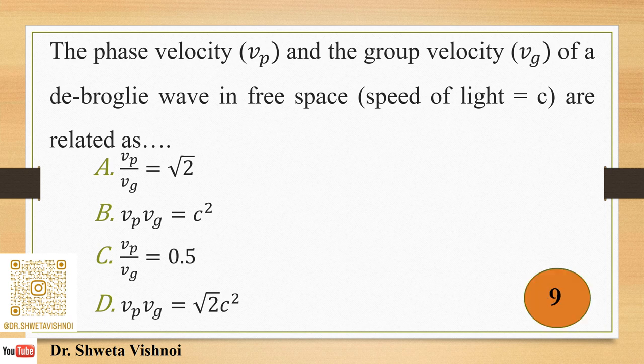Time has started. This is a theory question. The relation between vp and vg is from the Heisenberg uncertainty principle and de Broglie concepts — video links are in the description box where these are explained in detail. Time is up; the answer is B: vp·vg = c².